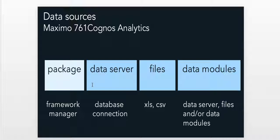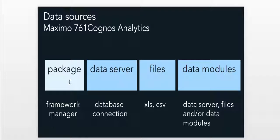Whenever we want to create new content in Cognos, whether it's a dashboard or a report, we always have to start by selecting a data source. With Cognos Analytics, we have four choices: we can use a package, a data server, a file, or a data module. The last three — data server, files, and data modules — are new with Cognos Analytics. Using a package has always been the traditional method of creating content with Maximo and Cognos.